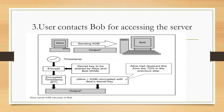In the third step, the user contacts Bob to access the server. Alice has received her ticket from the TGS. She can now send the session key KAB — received from TGS — to Bob in order to establish a session and communicate with him. However, this request will not be sent openly; the KAB will be encrypted along with an encrypted timestamp.